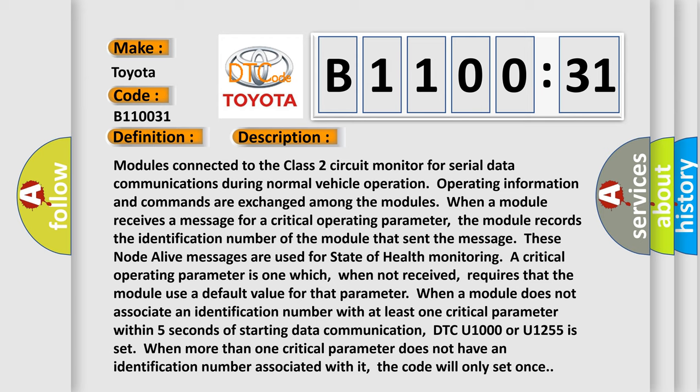Monitoring a critical operating parameter is one which, when not received, requires that the module use a default value for that parameter. When a module does not associate an identification number with at least one critical parameter within five seconds of starting data communication, DTC U1000 or U1255 is set.